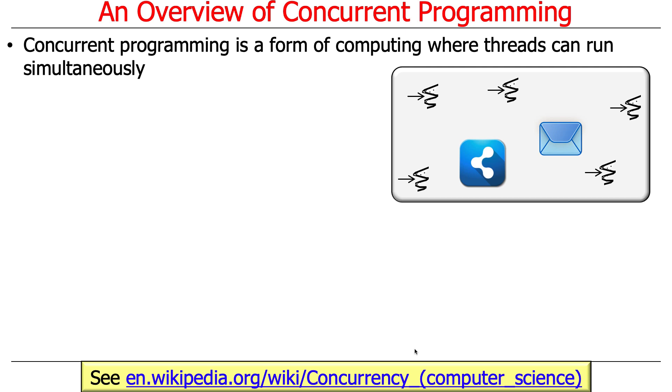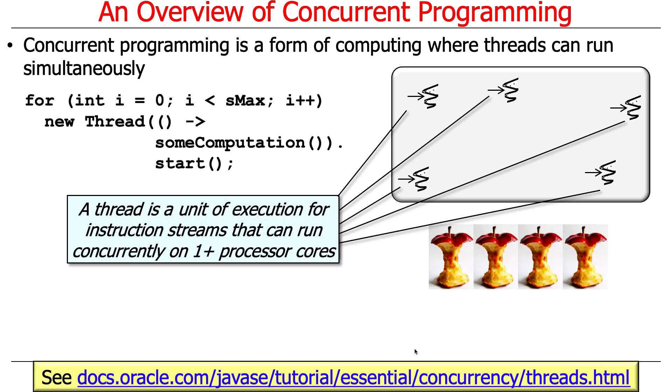Concurrent programming is a form of computing where threads can run simultaneously. And we'll talk about what a thread is here because that's crucial to make sense out of this. I try to put these links at the bottom of each of the slides just in case you're curious and want to learn more.